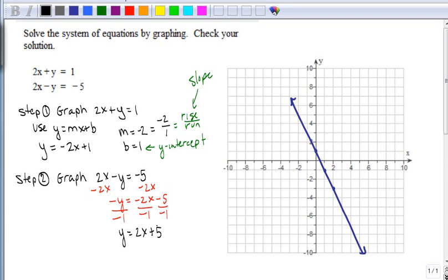So now in this problem we have our slope, our m, is 2. And I'll put that over 1 to make it a rise over 1. And our y-intercept is 5. So let's start with the y-intercept.